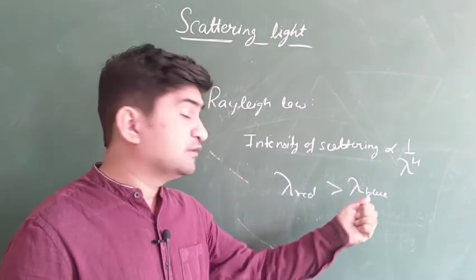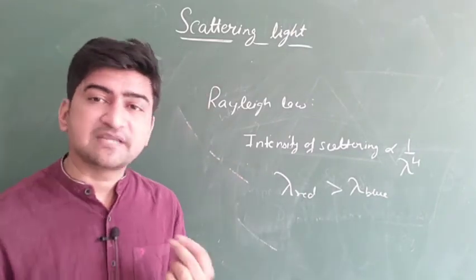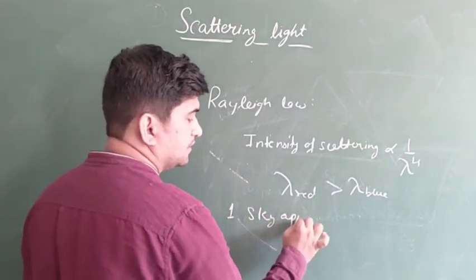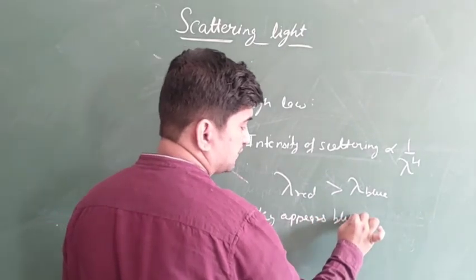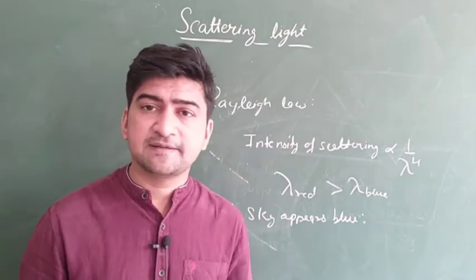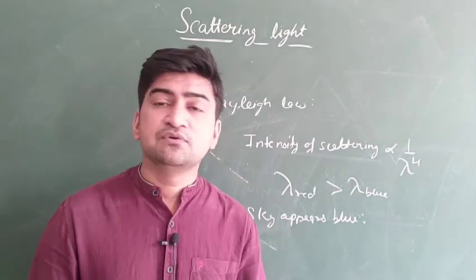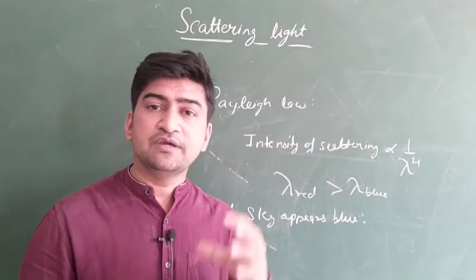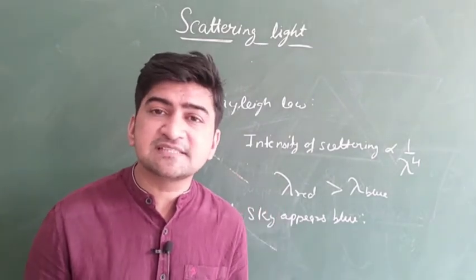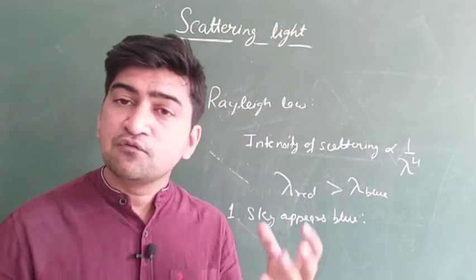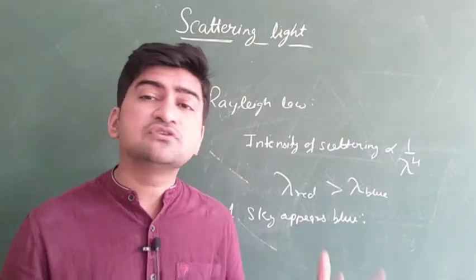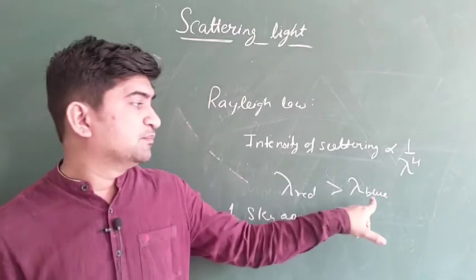Now its application. First application is why sky appears blue. This is a very frequently asked question - why sky appears blue or blue color predominance in the sky. The sky appears blue because the light coming from the sun, before reaching us, passes through the atmosphere. The atmosphere has gases, gas molecules, which absorb the sun's light and re-radiate it. This is called scattering.